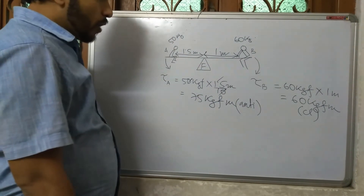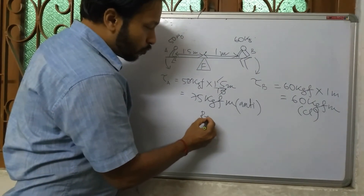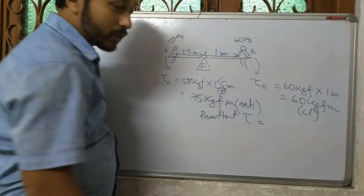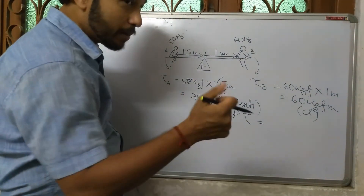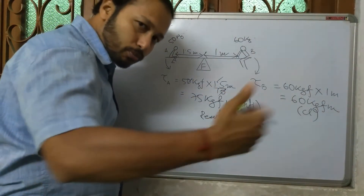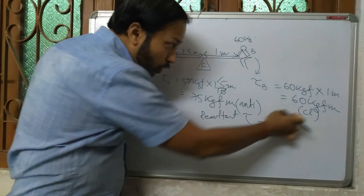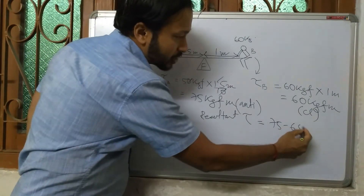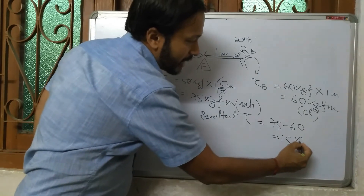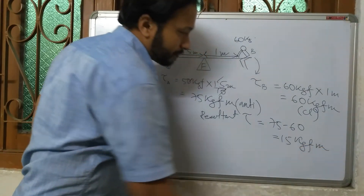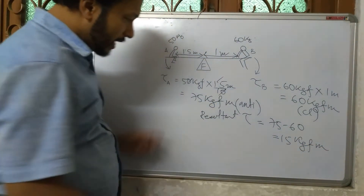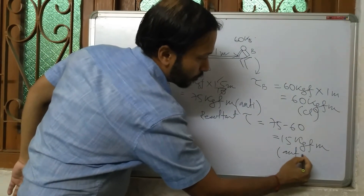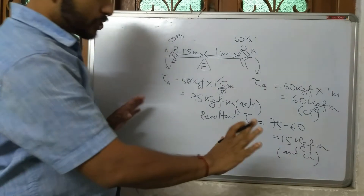Now we have to find the resultant torque. The resultant torque is the bigger minus the smaller. The bigger is 75 and the smaller is 60, so 75 − 60 = 15 kgf·m. Since anticlockwise is bigger, the resultant torque is 15 kgf·m anticlockwise.